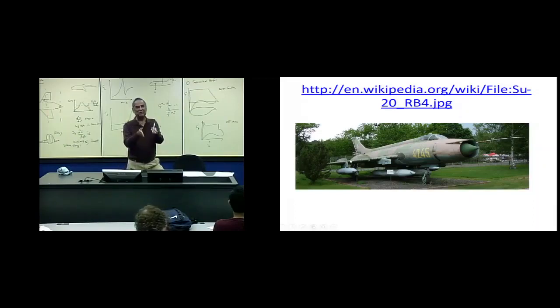So, one way people crudely prevented this was to put what they call boundary layer fences. Then you basically literally put metal structures on the wing that keeps the span wise flow from happening. It forces the flow to turn around. So, these are called the boundary layer fences. Do you all see it? This is the boundary layer fence, boundary layer fence, and so forth.